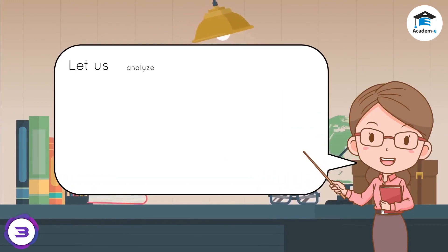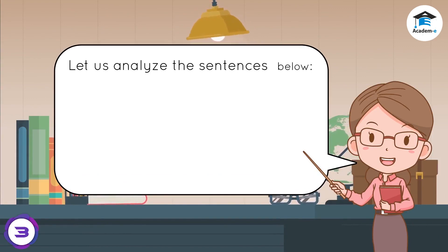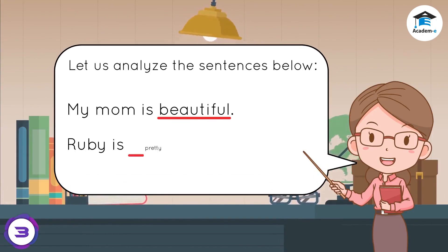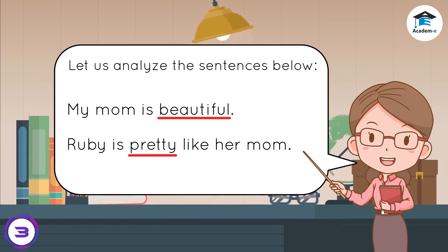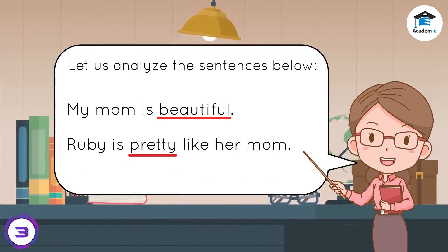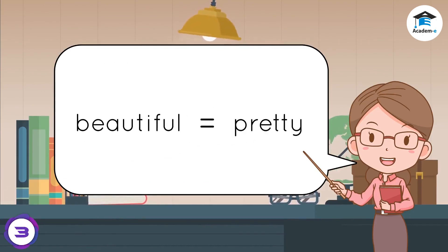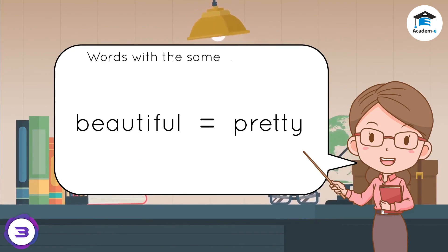Let us analyze the sentences below. My mom is beautiful. Ruby is pretty like her mom. What did you notice about the given sentences? You are definitely correct — the underlined words 'beautiful' and 'pretty' have the same meaning. Words with the same or similar meaning are called synonyms.